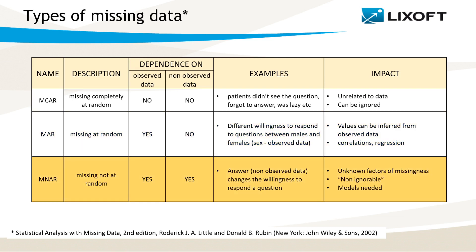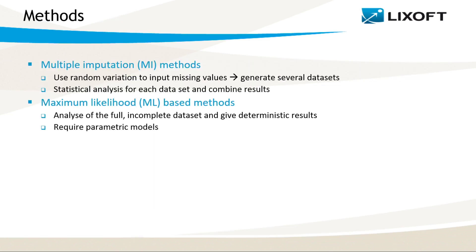Finally, MNAR stands for missing not at random and means that the missing data mechanism depends on both observed and unobserved data. For example, an answer itself can influence how much certain patients want to reveal that answer, but in general we do not know the relationship. If the data are truly missing not at random, the missing data cannot be ignored and the mechanism must be modeled as part of the estimation process in order to produce unbiased parameter estimates.